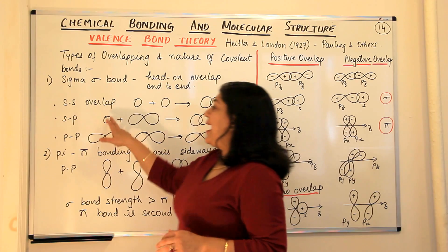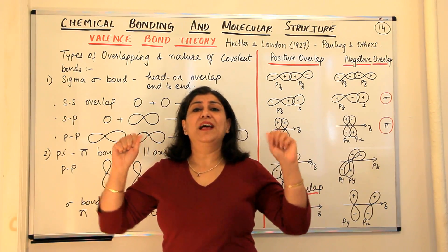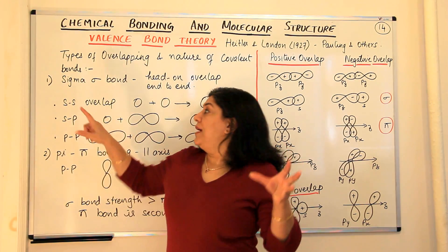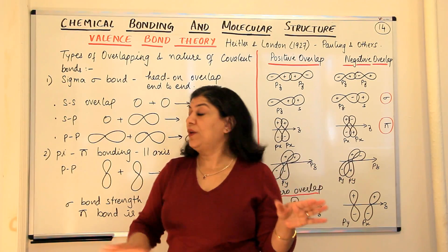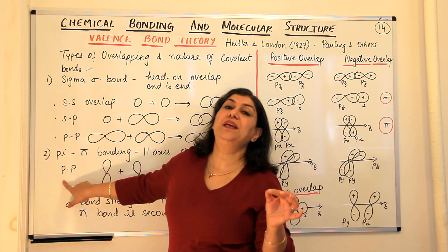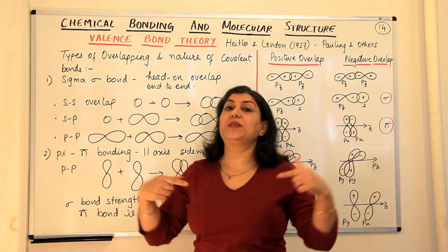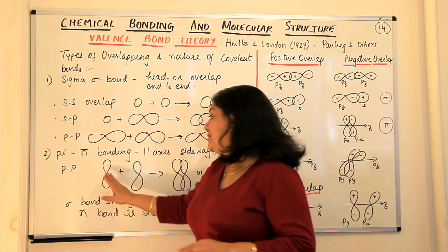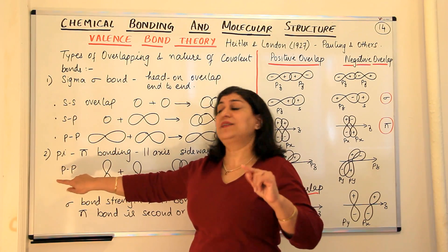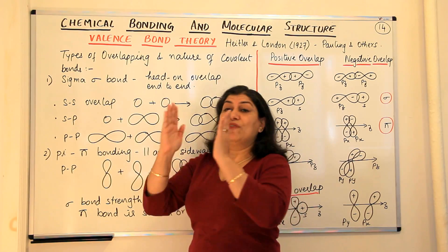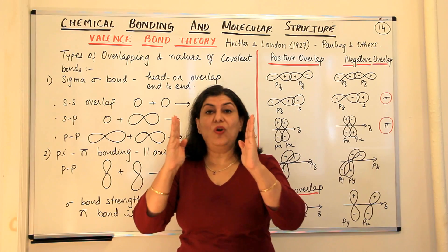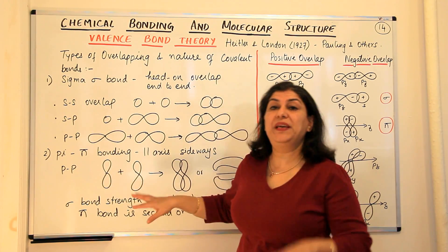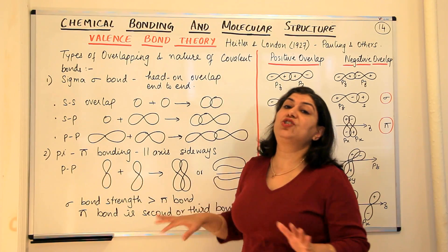Can s orbitals form a pi bond? S orbitals are spherical and do not have a direction — they are not directed towards different axes, they are a sphere. So s orbitals always form sigma bonds; they cannot form pi bonds. For the formation of a pi bond, you need py and px orbitals, assuming that the pz orbital is along the inter-nuclear axis and has already formed the sigma bond. The px and py orbitals then overlap with each other — px of one atom with px of the other — because for sideways overlapping they should be parallel to each other, leading to the formation of a pi bond.